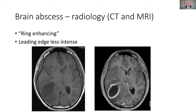Radiologically, these are classically ring-enhancing lesions on CT and MRI. MRI is a bit more sensitive and clear. You can see a leading edge which is less intense, with a rim of enhancement circumferentially, and some T1 hypo-intensity around it representing edema.